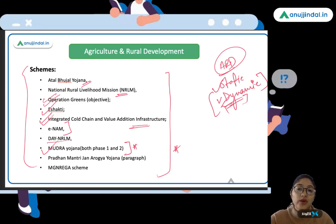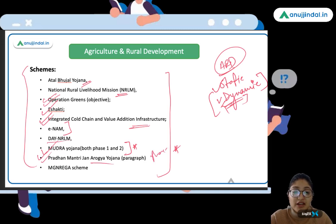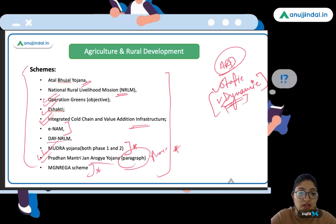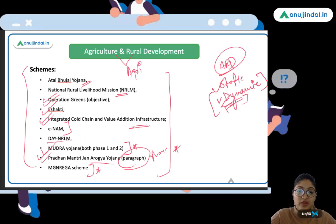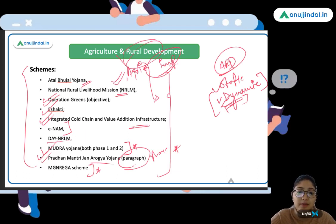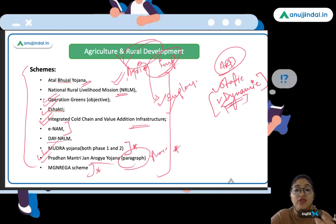The loan limit that could be sanctioned under Mudra was asked. There was also a question on Pradhan Mantri Jan Arogya Yojana, which came in Phase 2 — one paragraph with four questions based on it. Then there was a question from the MGNREGA scheme. So these are the schemes that have been asked in Agriculture and Rural Development. All agriculture-related schemes are important, and particularly schemes related to rural development — employment generation, poverty eradication, and rural infrastructure development — are very, very important.